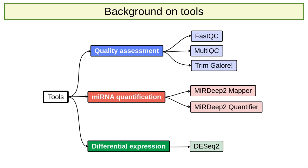FastQC provides a simple way to do some quality control checks on raw sequence data coming from high-throughput sequencing. MultiQC allows aggregating results generated by FastQC across many samples into a single report. TrimGalore is a wrapper tool around Cutadapt and FastQC, which allows consistently applying quality and adapter trimming to FastQ files. To carry out the microRNA quantification, we will use two modules belonging to the MirDip tool: MirDipMapper and MirDipQuantifier. Finally, we will use DESeq2, a package for differential expression analysis of count data based on the negative binomial distribution.